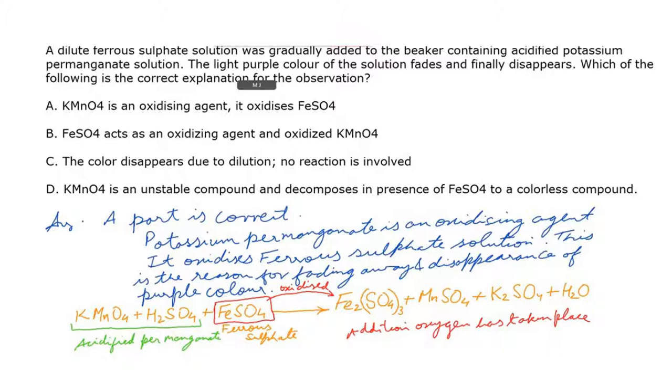The correct answer is Part A: Potassium permanganate is an oxidizing agent and it oxidizes ferrous sulfate. Therefore, the color slowly fades and disappears as the reaction starts happening. The oxidation occurs gradually, and when finally all of the ferrous sulfate solution is oxidized, the purple color is gone.